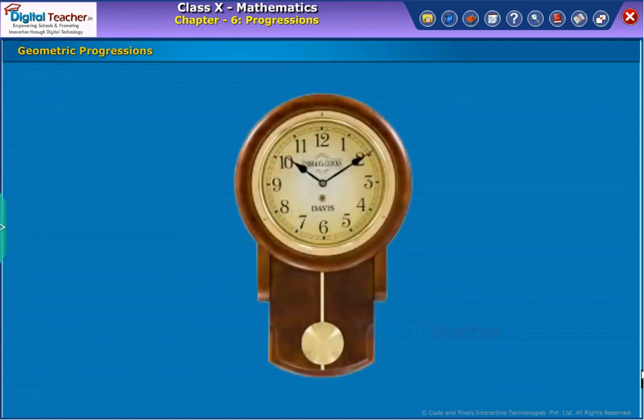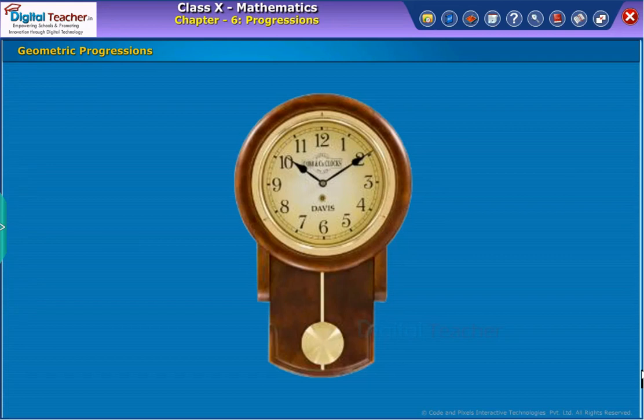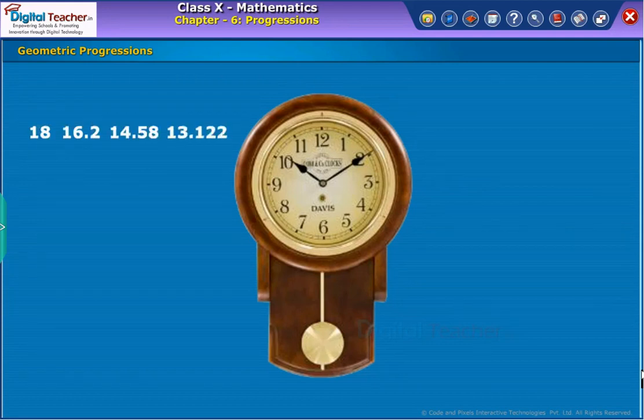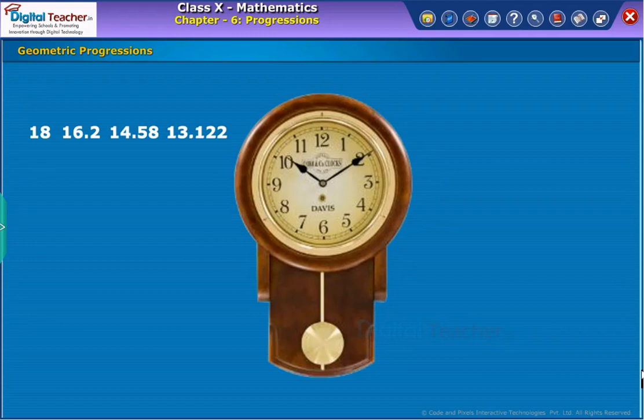Let us consider a pendulum which swings through an arc of 18 inches. On each successive swing, the length of the arc is 0.9 inches more of the previous length. So the length of the arc at first, second, third, so on swing will be respectively 18, 16.2, 14.58, 13.122 and so on. And the list of numbers are in GP, since the common ratio between two successive terms is same.